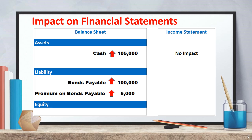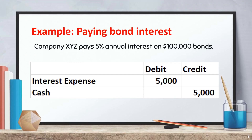Balance sheet impact: cash increases by $105,000, bonds payable increases by $100,000, and premium on bonds payable increases by $5,000. On the income statement, there is no immediate effect, but interest expense will be lower over time due to the premium.